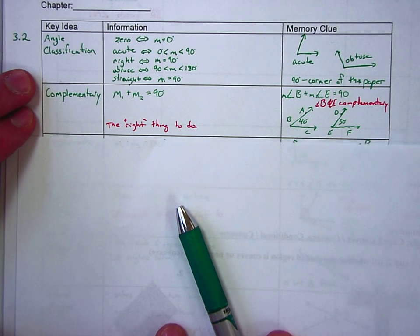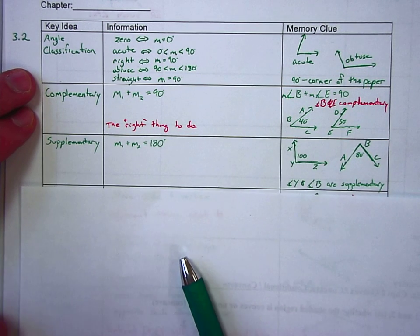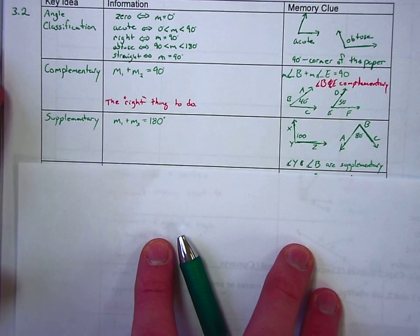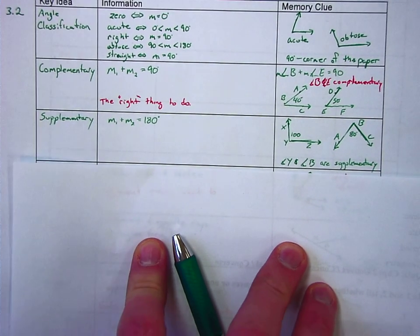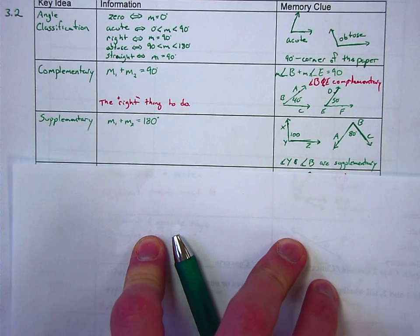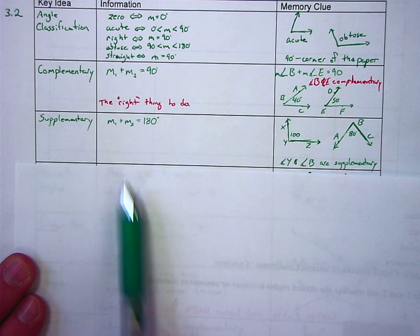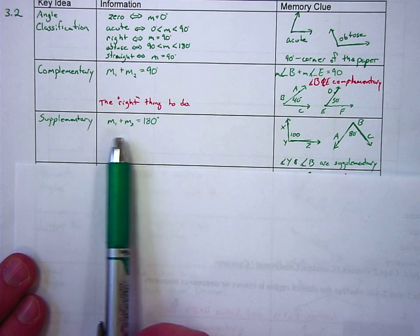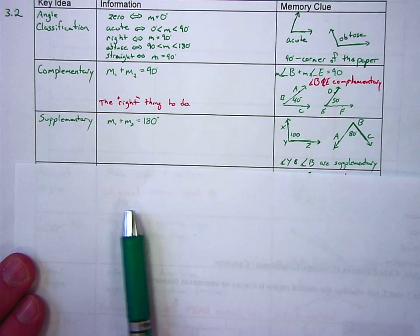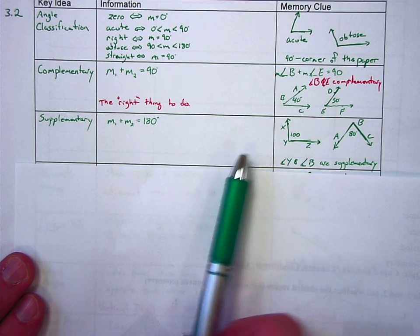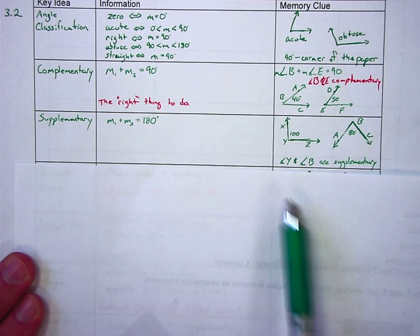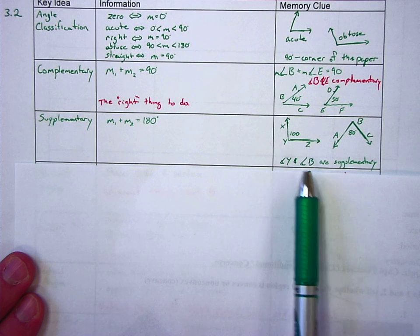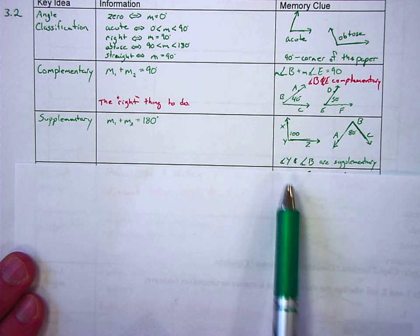Supplementary, same idea, but we want things to be complete. And in geometry, when things are complete, you're talking about 180 degrees. So the measure of angle 1 plus the measure of angle 2, M sub 1 plus M sub 2, is equal to 180 degrees. So here we have angle XYZ and angle ABC. So we would say that angle Y and angle B are supplementary because 180 degrees together are 180 degrees.